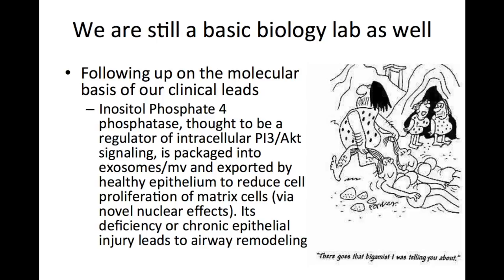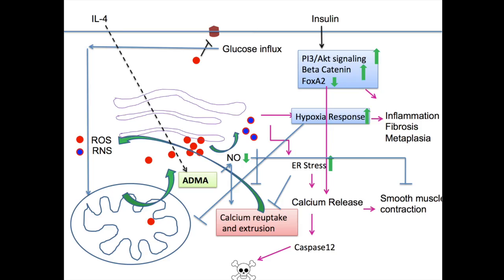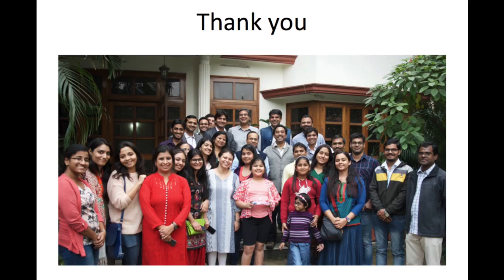We are still a basic biology lab as well — I'm not going to give up my biogamy that easily. We have some very interesting stories on inositol phosphatase, a classical molecule thought to signal in the cytoplasm for the PI3K/AKT pathway. We found a genomic signal for asthma, we can see it goes to the nucleus, and it is exported by healthy epithelial cells in microvesicles to surrounding cells, keeping them in check in a healthy lung — so only when the lung is injured will the remaining cells start proliferating. We are still working on a variety of pathways, now tying them together into much bigger models. I'll acknowledge my funders from India and America, and the mentors and colleagues. Thank you all very much.